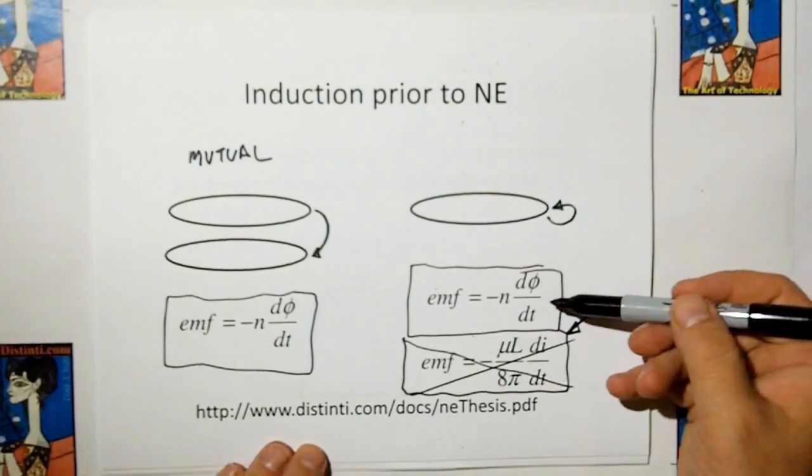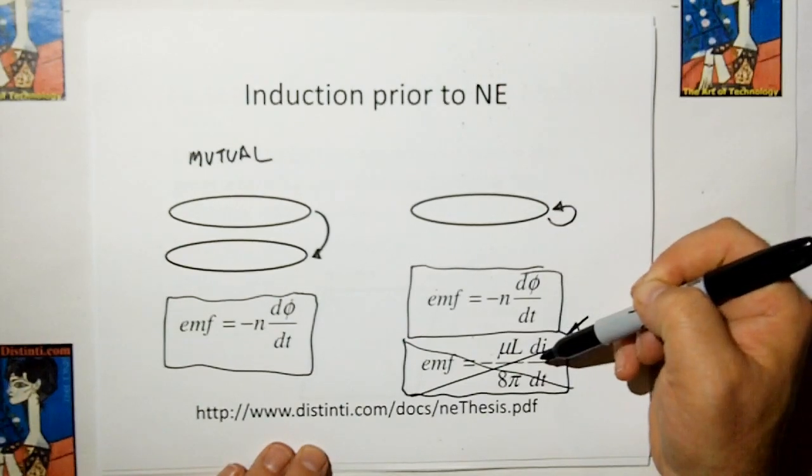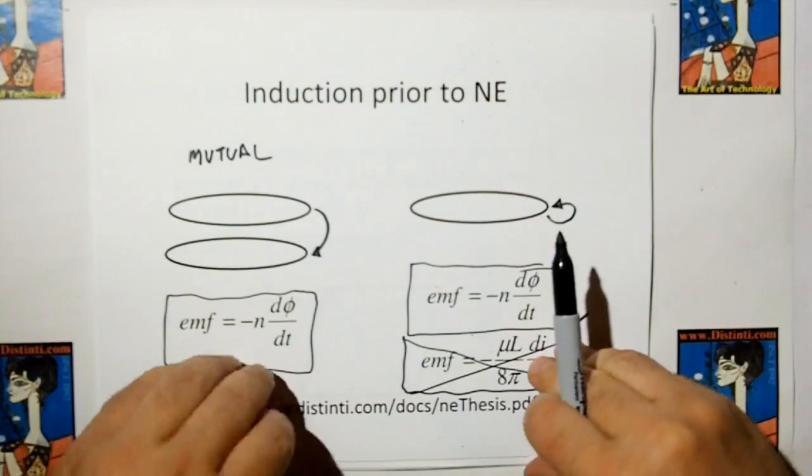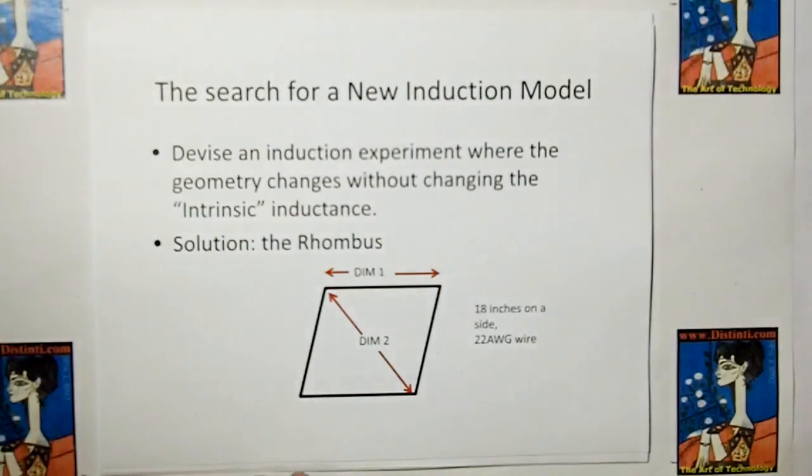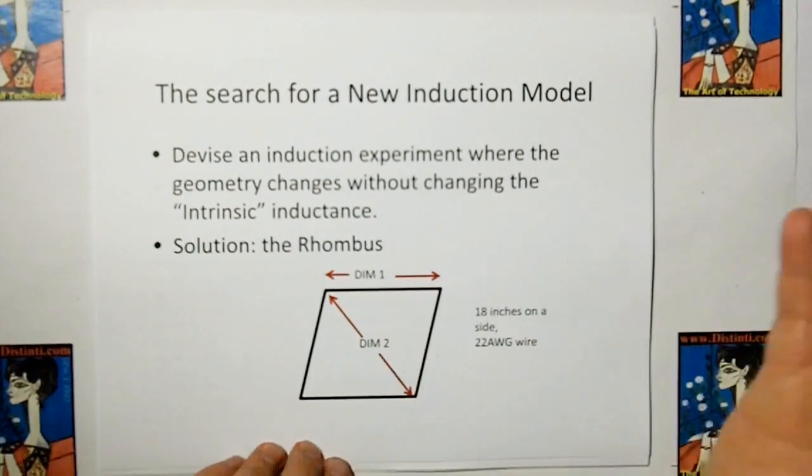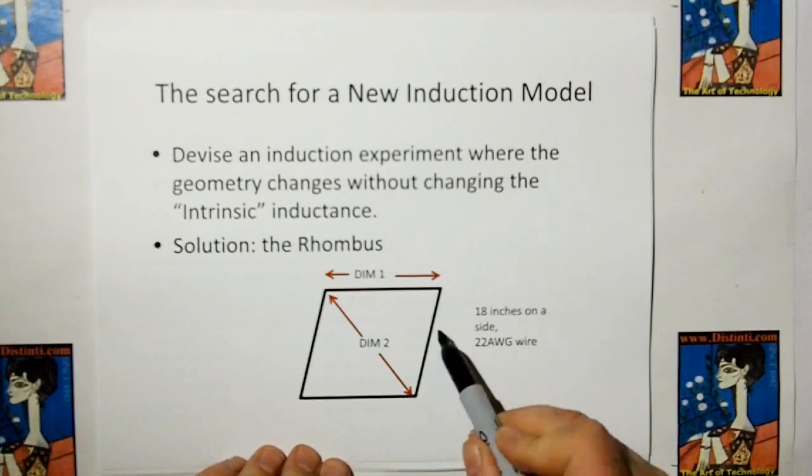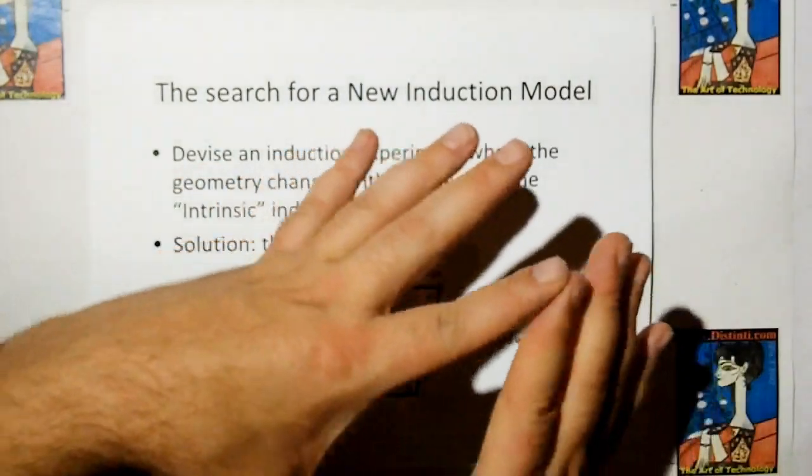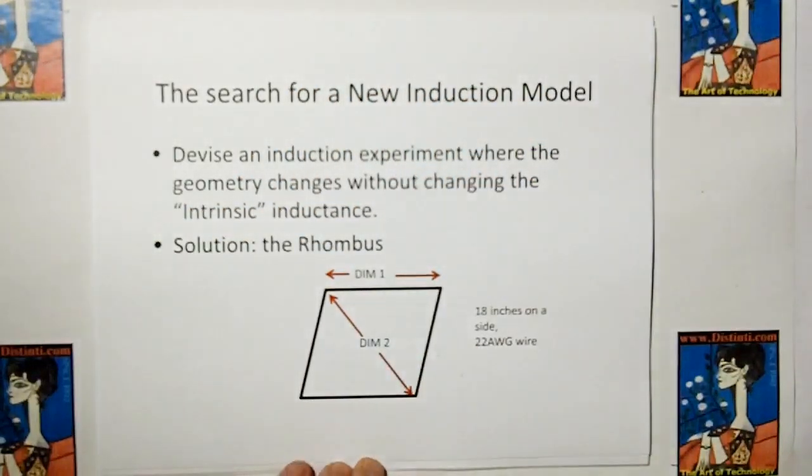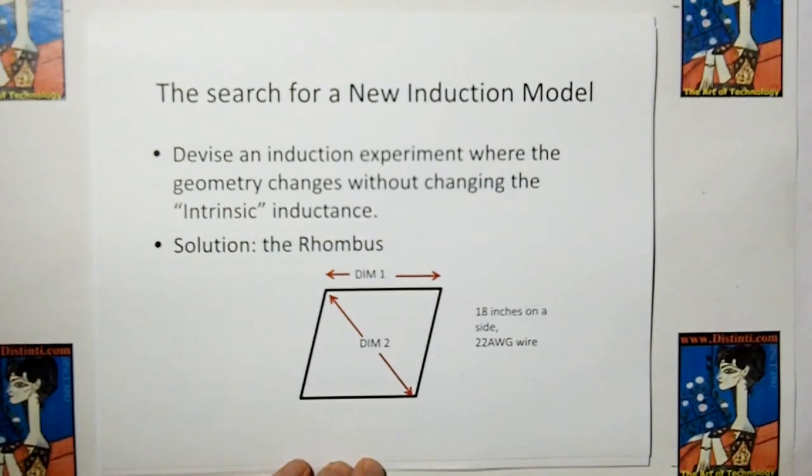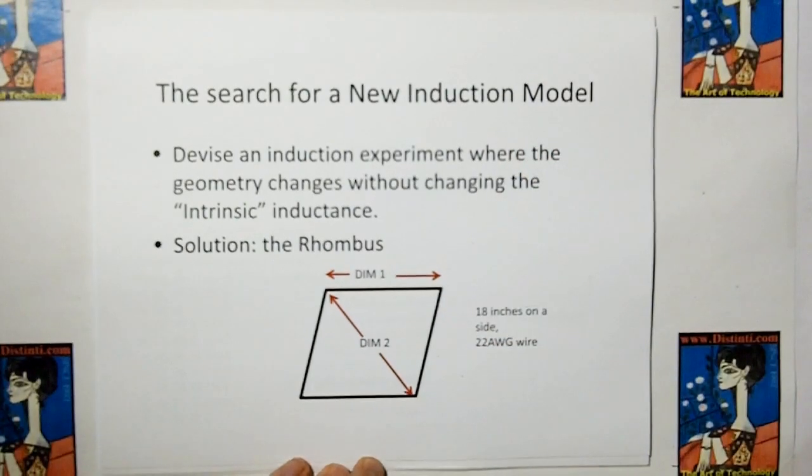But now we're left with the fact that we don't have a complete model for the inductance, self-inductance of a loop, because Faraday's law obviously needs something else. So I said, okay, I can figure out what a model for inductance should be. I need an experiment, a self-inductance experiment, that keeps intrinsic inductance constant, because we don't know what it is. And that experiment is a rhombus-shaped loop, because the length of the rhombus stays the same, but I can change the area without changing the outside length of the wire. So this turns out to be the perfect experiment to identify what the induction model should be.